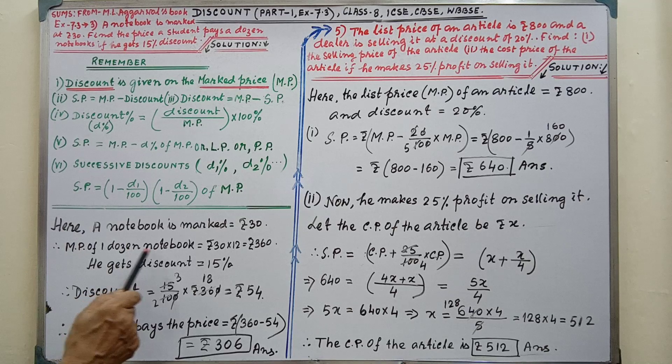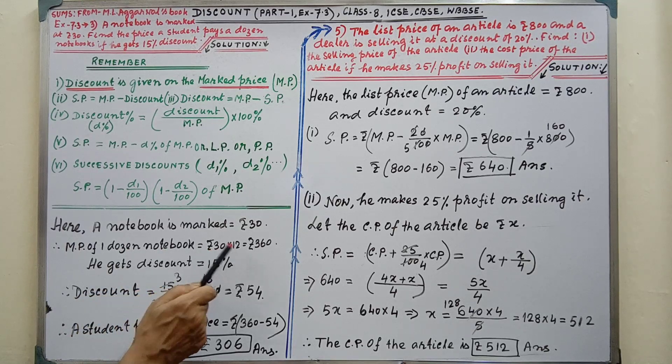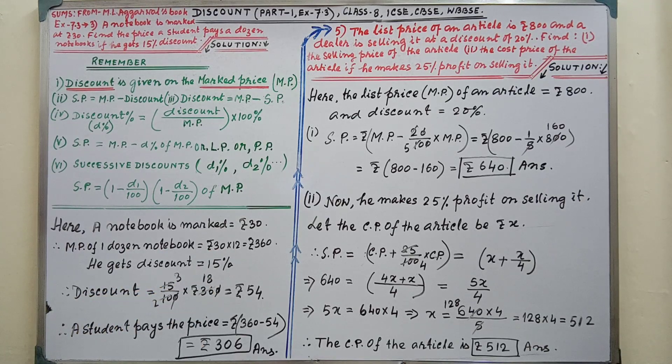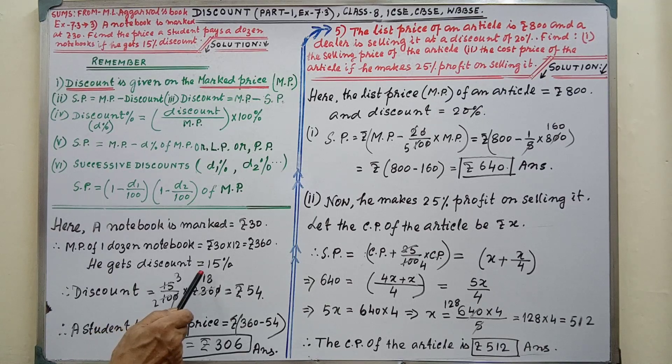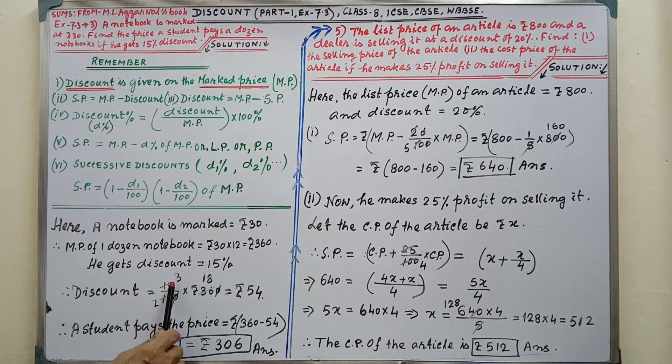Here a notebook is marked Rs 30. MP of 1 dozen notebook = Rs 30 × 12 = Rs 360. He gets discount = 15%. Therefore discount = (15/100) × Rs 360. By calculation it is coming 54.